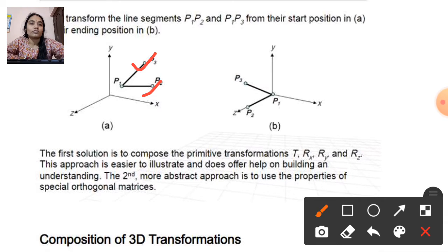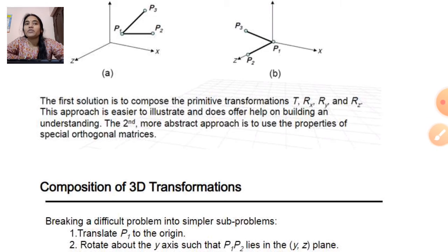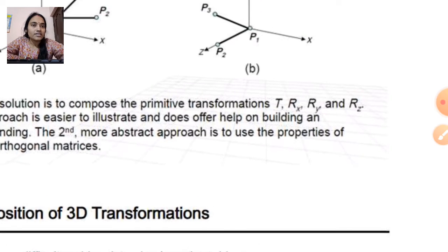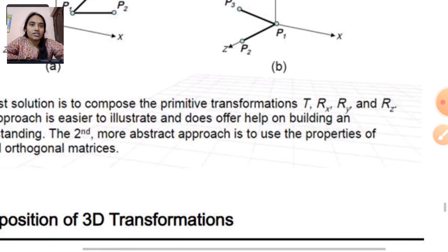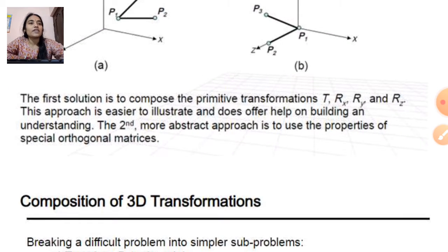So how is it possible? The first solution is to compose the primitive transformations: first translate it, then rotate it, then again translate it. That means the transformation sequence is T, then Rx, Ry, Rz — rotation in the X axis, rotation in the Y axis, rotation in the Z axis. This approach is easier to illustrate and does offer help in building and understanding.